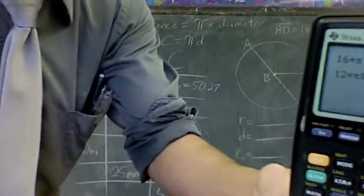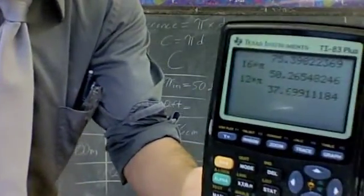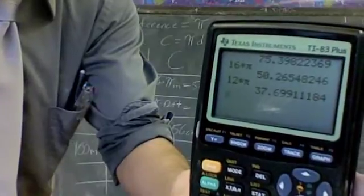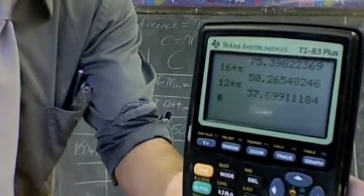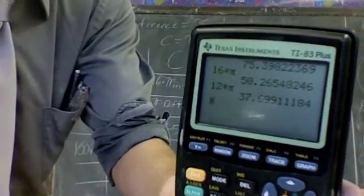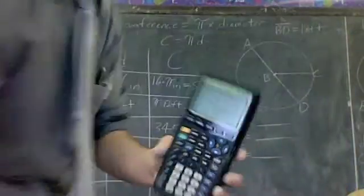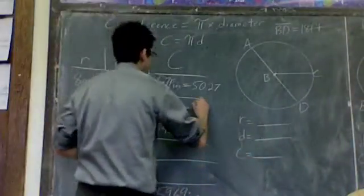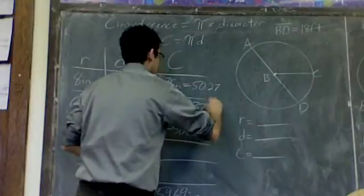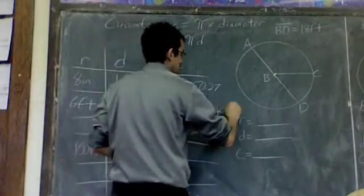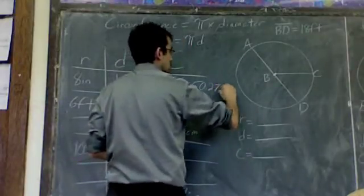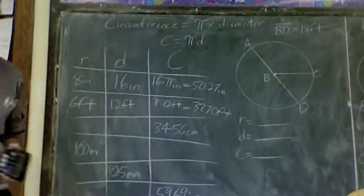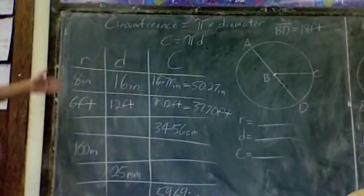You see it right there. 12 times pi. And we get 37.699. That third 9 tells me to, or the third number, the 9, tells me to round up. Move the 69 up to 70. So it's going to be 37.7. This is in feet, so is this. I'm going to put inches up here. Okay, that's how these two work. These are pretty standard.